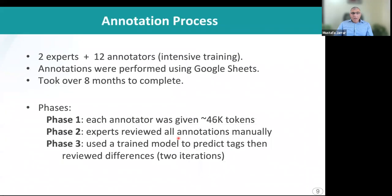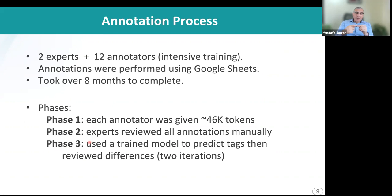Fourteen people participated in the annotations, two of whom were NER experts. Annotations were performed using Google Sheets over eight months. We annotated the corpus over three phases. In the first phase, we asked annotators to annotate the corpus manually. Then the experts reviewed the annotations and gave feedback to the annotators to revise. At the end, we fine-tuned the model and used it to predict the correct tags, then manually reviewed any differing tags and corrected mistakes. We did this twice.